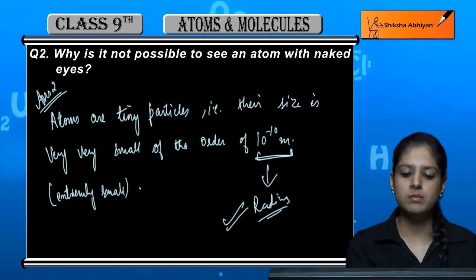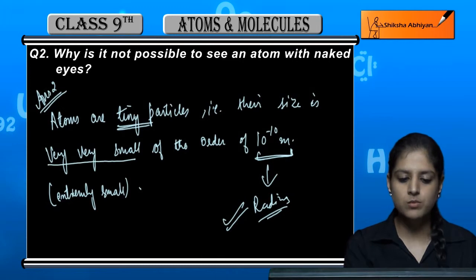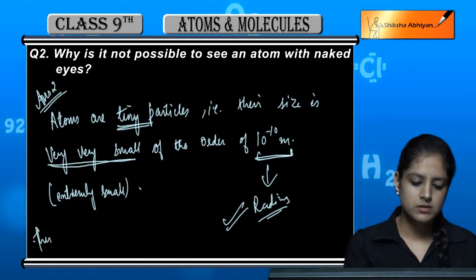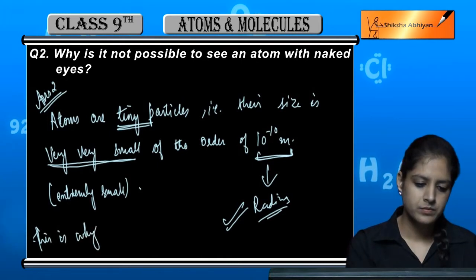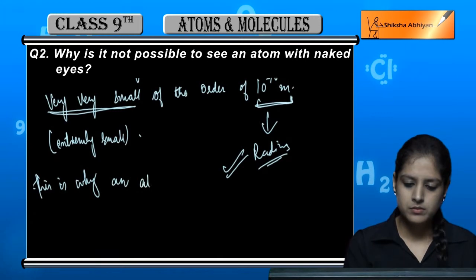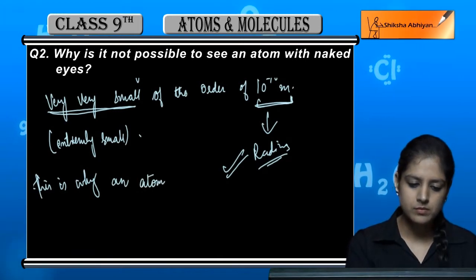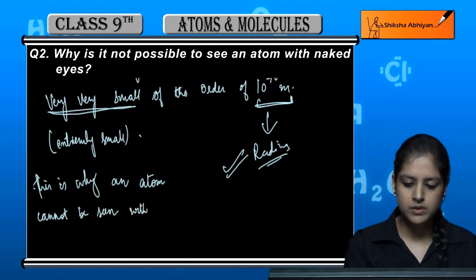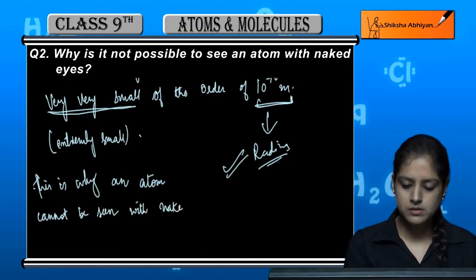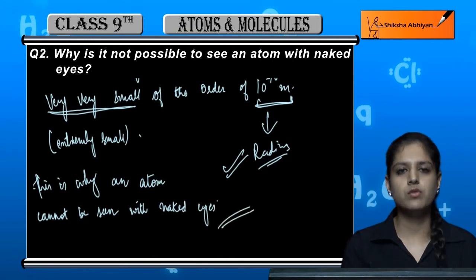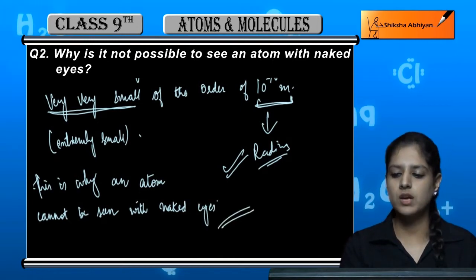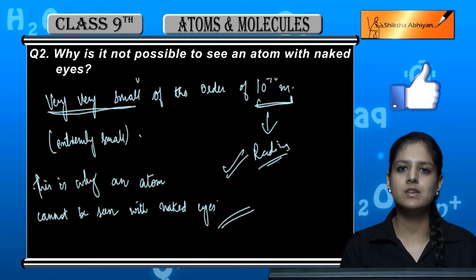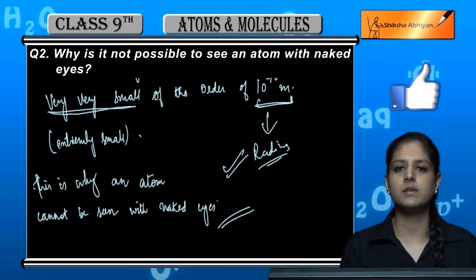It is a very small particle, and because it is so very small, this is why an atom cannot be seen with the naked eye. So, this is the reason why we cannot see atoms with the naked eye.